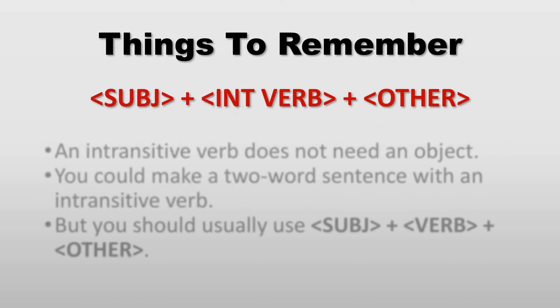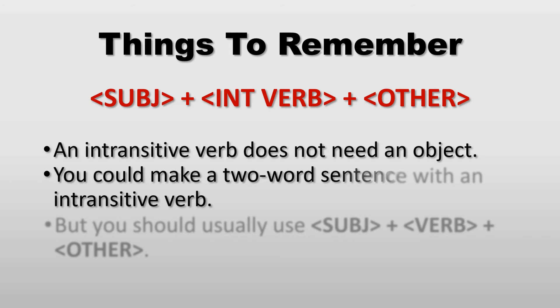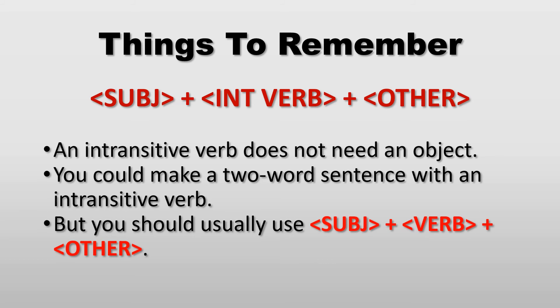Let's review what we need to remember about using intransitive verbs. An intransitive verb does not need an object. You could make a two-word sentence with an intransitive verb, but such sentences are rather rare. Usually, try to use the key structure of subject plus verb plus other.